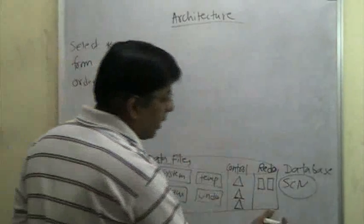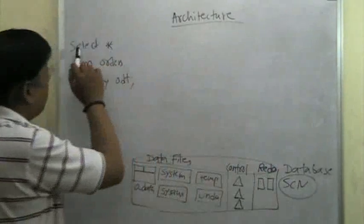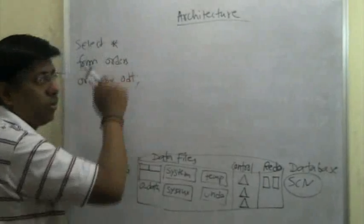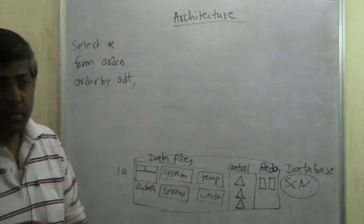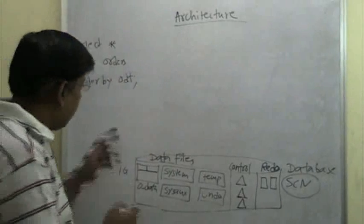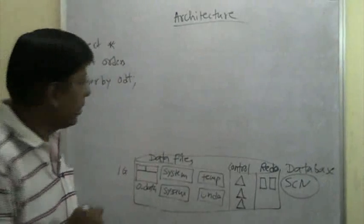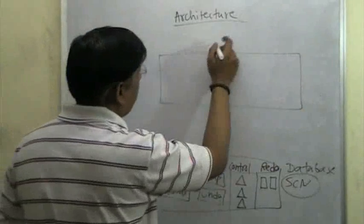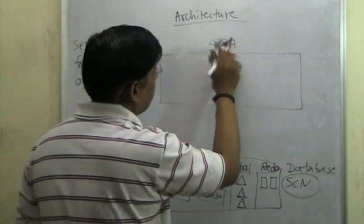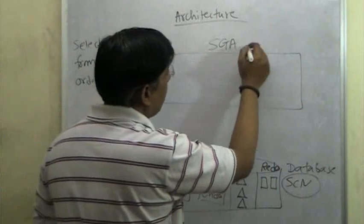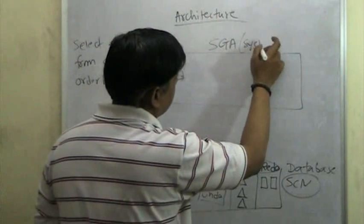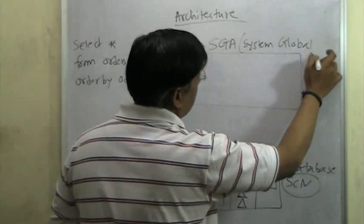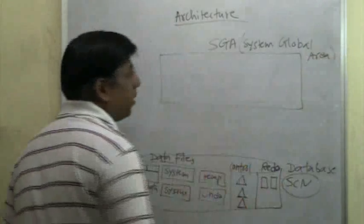This is what a database is. Now, as somebody types this SELECT statement, the data is on disk and it has to be given to the user. It is not directly read from disk and given to the user. There is a memory area called SGA — System Global Area. This is the memory, this is the hard disk, and this is the RAM.